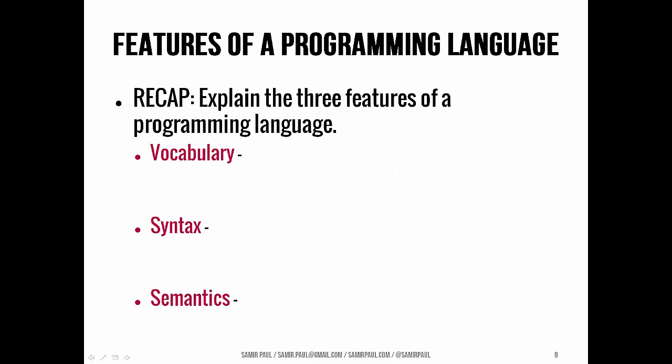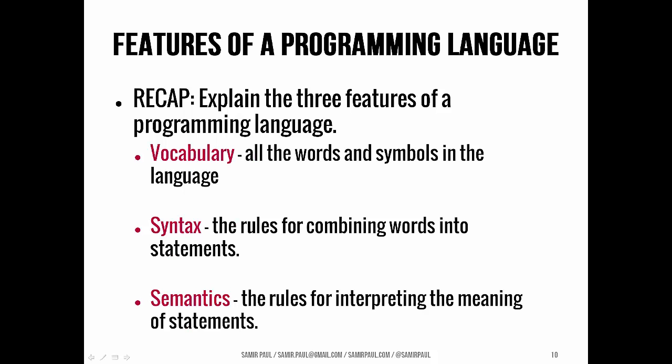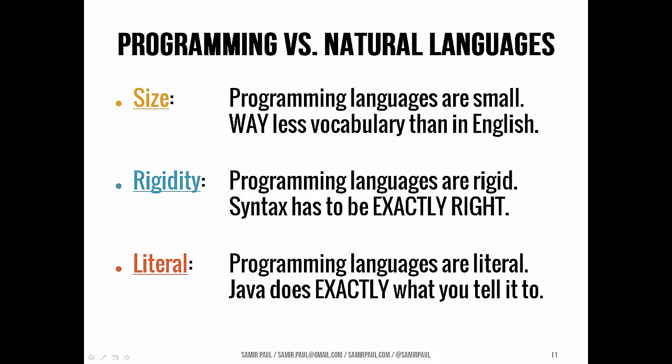So just to recap, those three features: the vocabulary — all the words and symbols in the language; the syntax — all the rules that we use to combine those words into statements; and semantics — the rules for how we make meaning from those statements. Those are some similarities between Java and natural language like English.